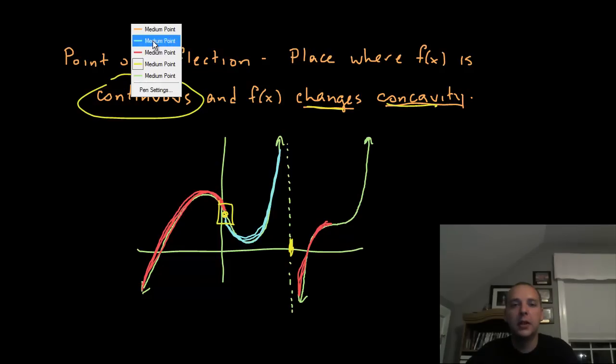Now later in the function it's concave down and then it switches to be concave up. Now we would call this place right here, we would call that a point of inflection. So basically it's a place where your function changes concavity with the caveat that it has to be continuous there. So it's something you have to watch out for.